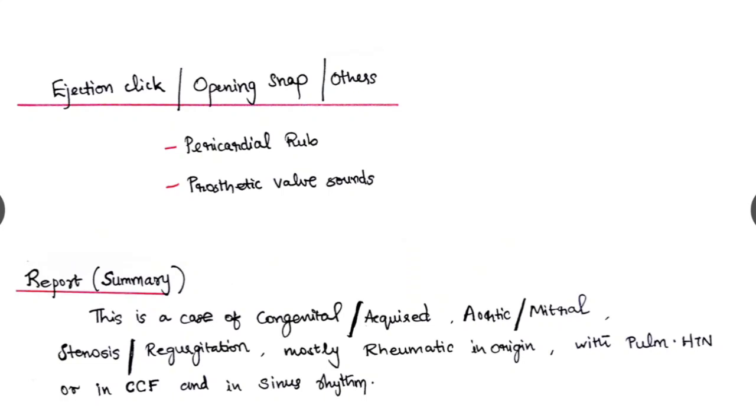And regarding the other sounds, added sounds, it can be ejection click, there can be an opening snap, and other sounds. Ejection click and opening snap are heard at valvular heart disease like AR, AS, MS, MR, like that. Other sounds are pericardial rub, there can be a prosthetic valvular heart sound.